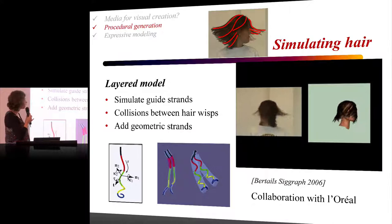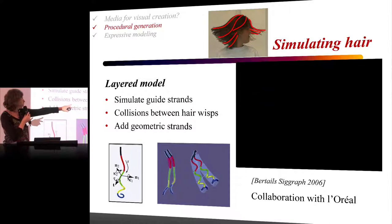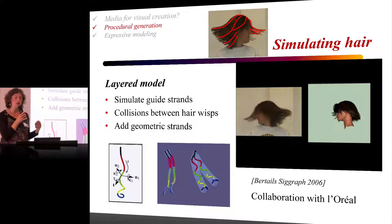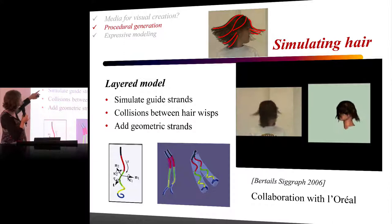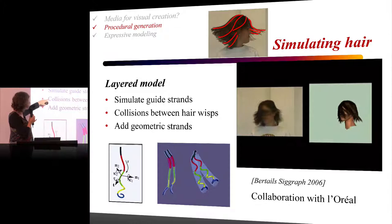Another example is virtual hair. Here we have a comparison between our virtual hair model — seen in slow motion — and a real person, to show how accurate our model is. The idea is that you only keep the degrees of freedom you need: you simulate guide strands, handle collisions at the level of hair wisps, and then add more geometric strands within the hair wisps.